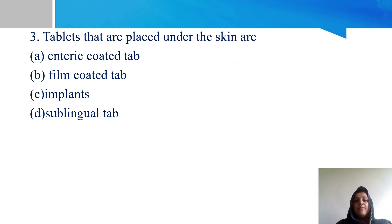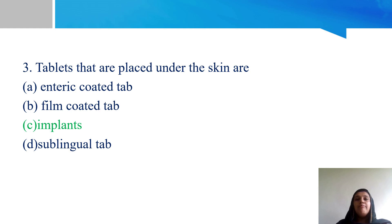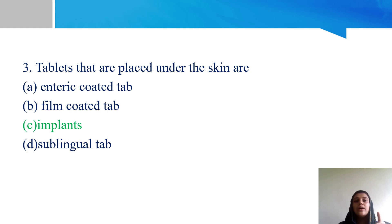Next question: tablets that are placed under the skin. Options: A - enteric coated tablet, B - film coated tablet, C - implants, and D - sublingual tablets. Option C - implants - is the right answer. Implants are placed subcutaneously below the skin, requiring a minor surgery for placement and drug absorption. They are sterile.